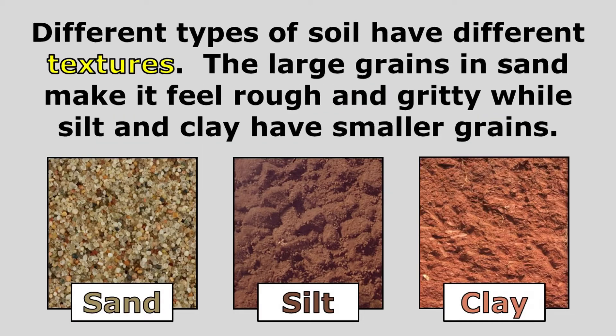Different types of soils have different textures. The large grains in sand make it feel rough and gritty, while silt and clay have smaller grains and actually feel smooth when you run it through your fingers.